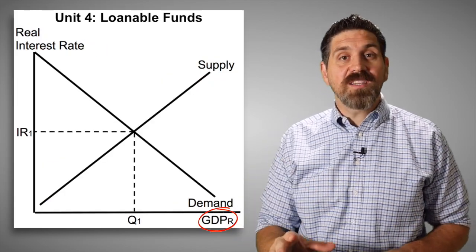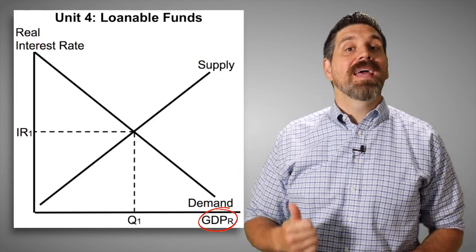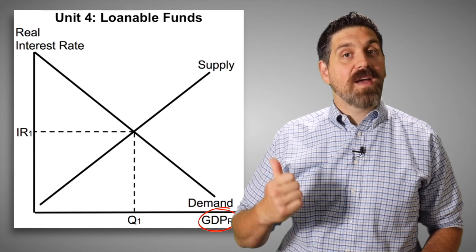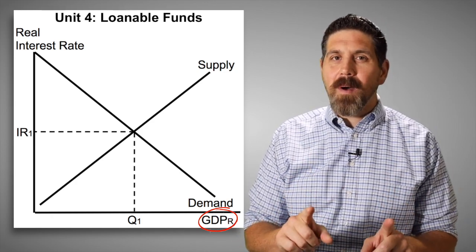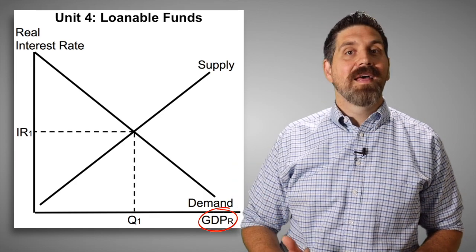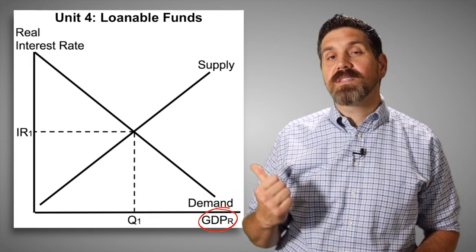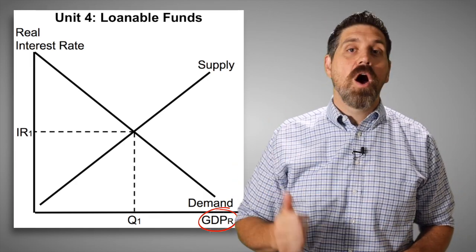Also in unit four, you learn about the loanable funds market. The graph looks like this. It is real interest rate. That's correct. We've got demand, supply, correct equilibrium. What's wrong is down here on the bottom where it says GDP. That is not GDP. That's supposed to be the quantity of loans. So there's only one mistake on that graph.